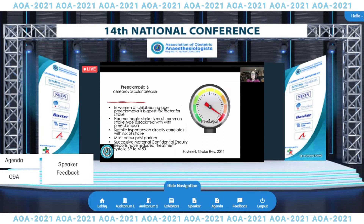Several studies show that systolic hypertension directly correlates with the risk of stroke. In pregnant patients who suffer stroke, most occur postpartum. Because of this correlation between systolic hypertension and stroke, the successive maternal confidential death inquiry reports in the UK have reduced the treatment threshold for systolic blood pressure to less than 150 mmHg.